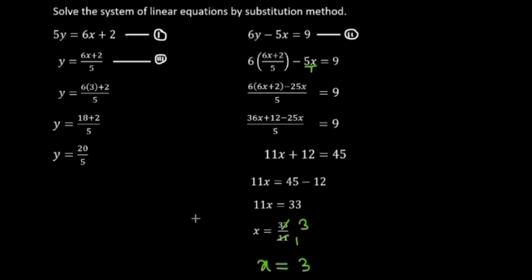Step number 3: substitute x equals 3 back into equation 3 to find y. y equals (6 times 3 plus 2) divided by 5. That is (18 plus 2) divided by 5, which is 20 divided by 5. Dividing: 5 goes into 20 four times. Therefore y equals 4.